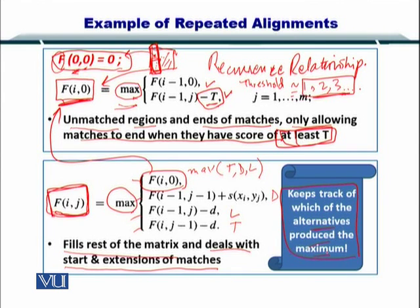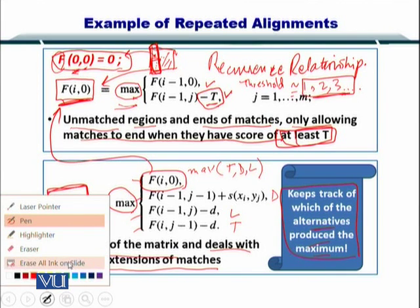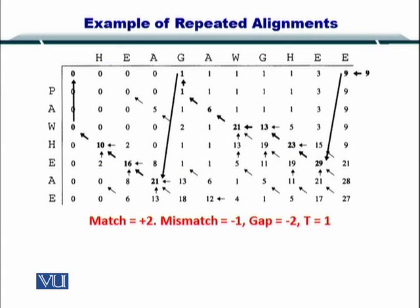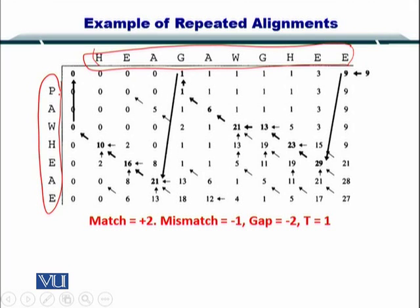What happens if we apply this recurrence relationship? Here is an example for you. You have two sequences here and here. You want to search for the repeated occurrence from this sequence in this sequence. What you have done is you have filled up all the positions in the alignment matrix as you can see here.